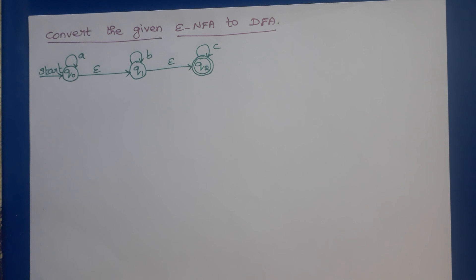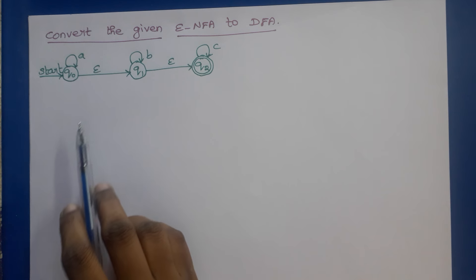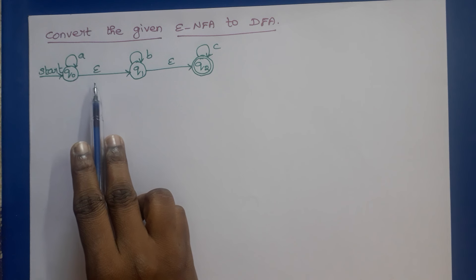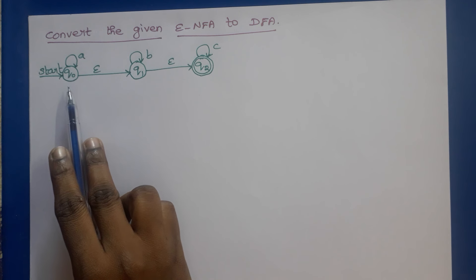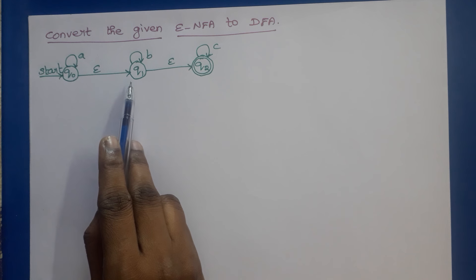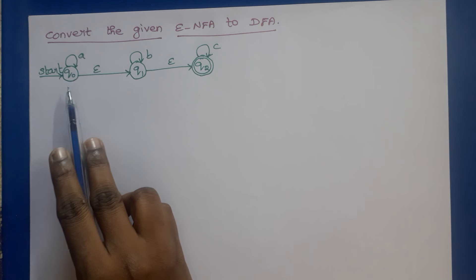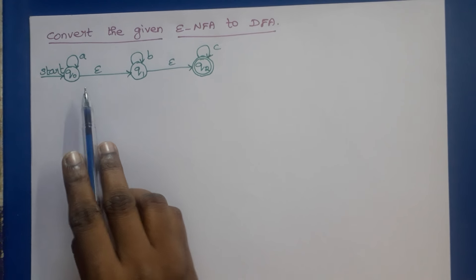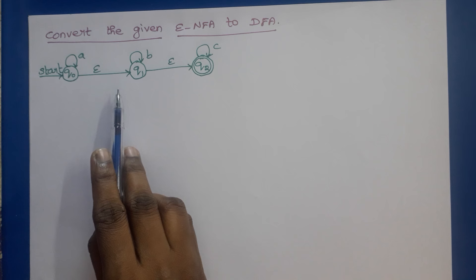Hello everyone. In this lecture we are going to discuss the conversion of epsilon NFA to DFA. An epsilon NFA consists of epsilon transitions, meaning without reading an input symbol it can change state from one state to another. So from state Q0 we can reach state Q1 without reading an input symbol. An NFA with epsilon transitions is called an epsilon NFA.